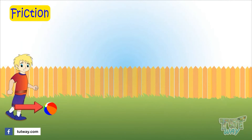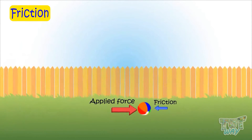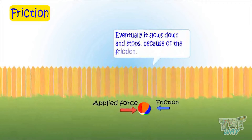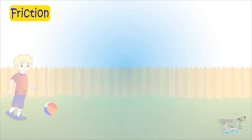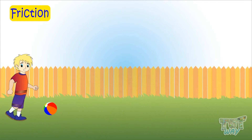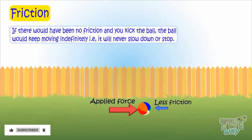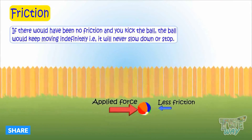Here we have a ball. Kick it and it will start moving, but eventually it slows down and stops. It is because of friction — the opposing force which is always there. If there were no friction and you kicked the ball, the ball would be moving indefinitely. That is, it will never slow down or stop.